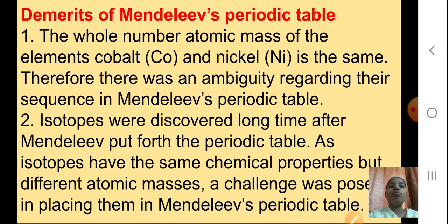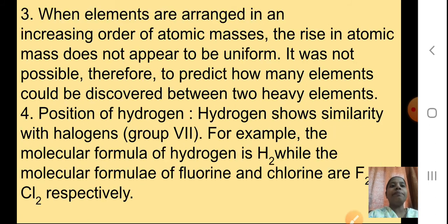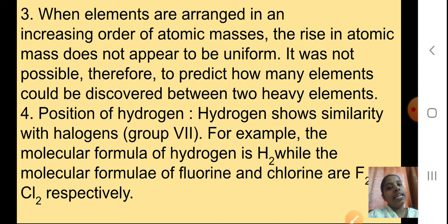Second, isotopes were discovered long after Mendeleev put forth the periodic table. As isotopes have the same chemical properties but different atomic masses, a challenge was posted in placing them in Mendeleev's periodic table — isotopes could not get a proper place in the table. Also, when elements are arranged in increasing order of atomic masses, the rise in atomic mass does not appear to be uniform, so it was not possible to predict how many elements could be discovered between two heavy elements.